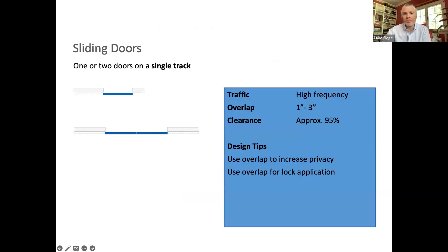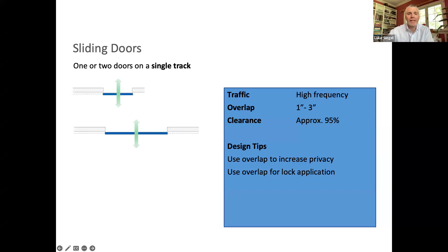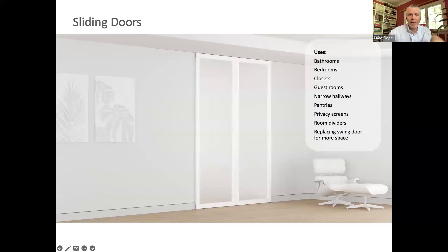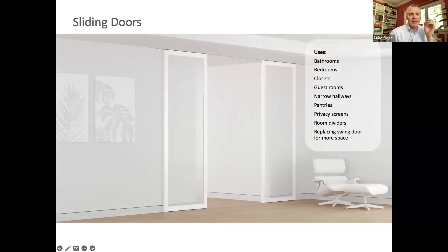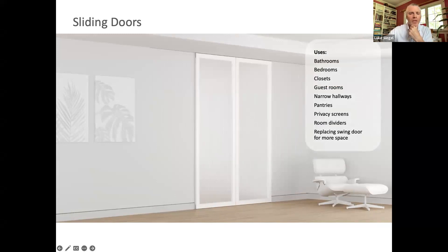Starting with sliding doors: a simple track with one or two panels is a high-frequency system that affords lots of access to space, lots of clearance, and is affordable. For pricing context, a 3-foot-wide, 8-foot-tall stile-and-rail panel with a laminate frame and translucent or transparent glazing would be approximately $1,500 per panel including all required hardware. There are many example uses shown — sliding doors are versatile.